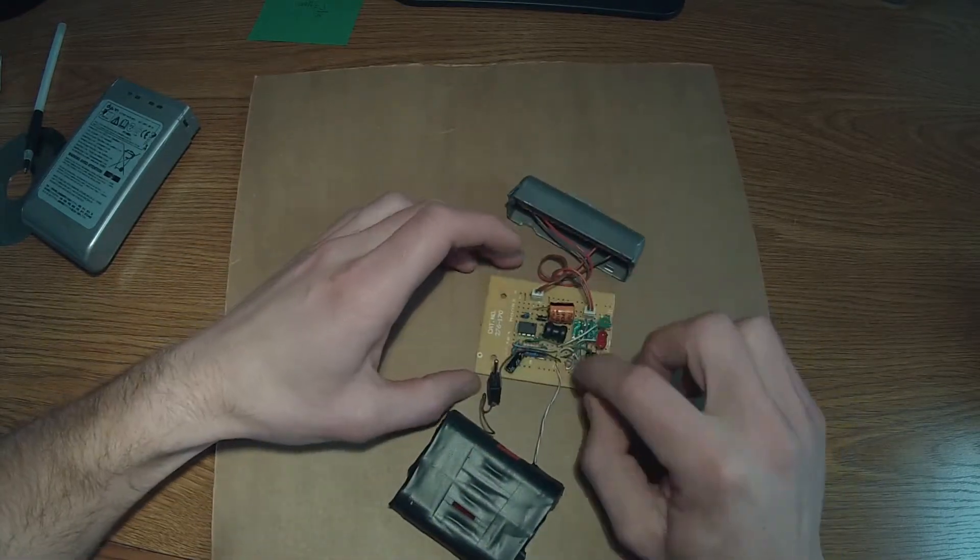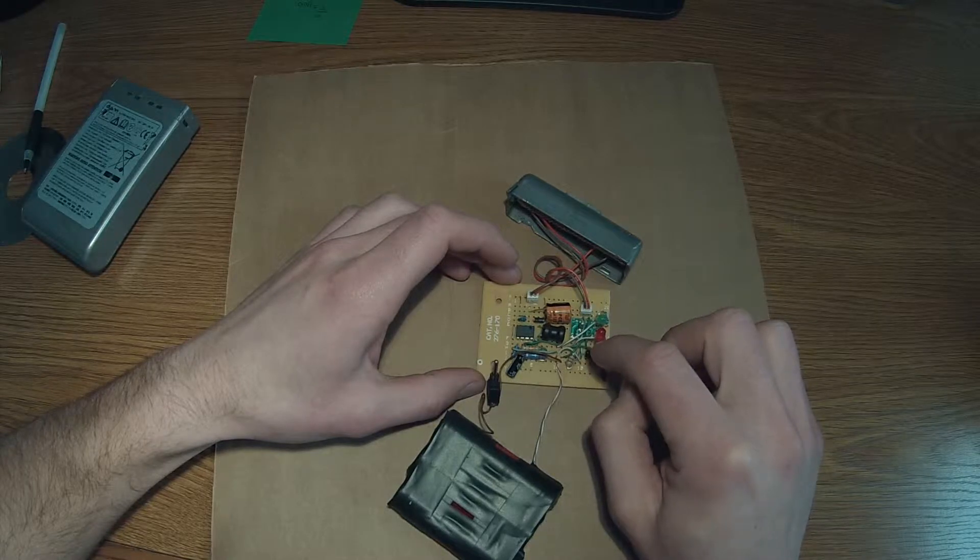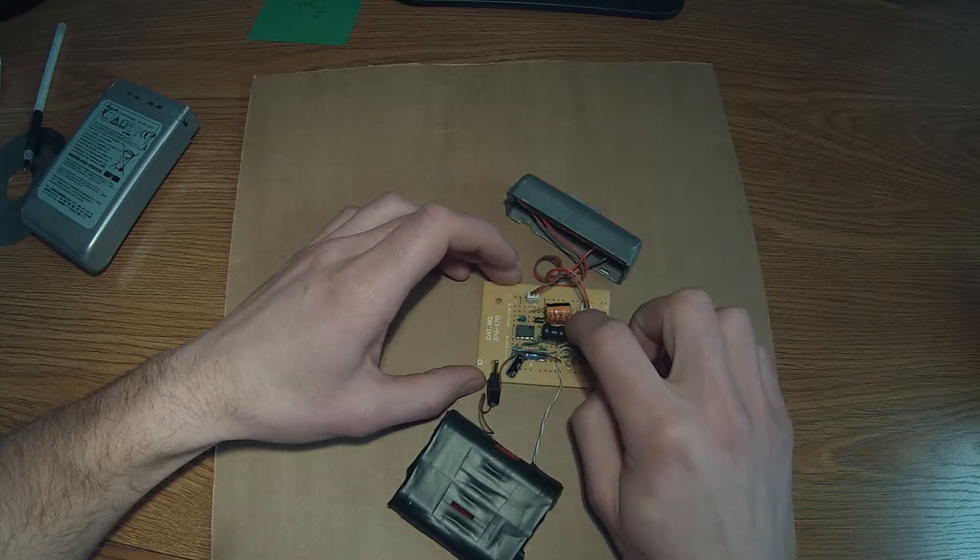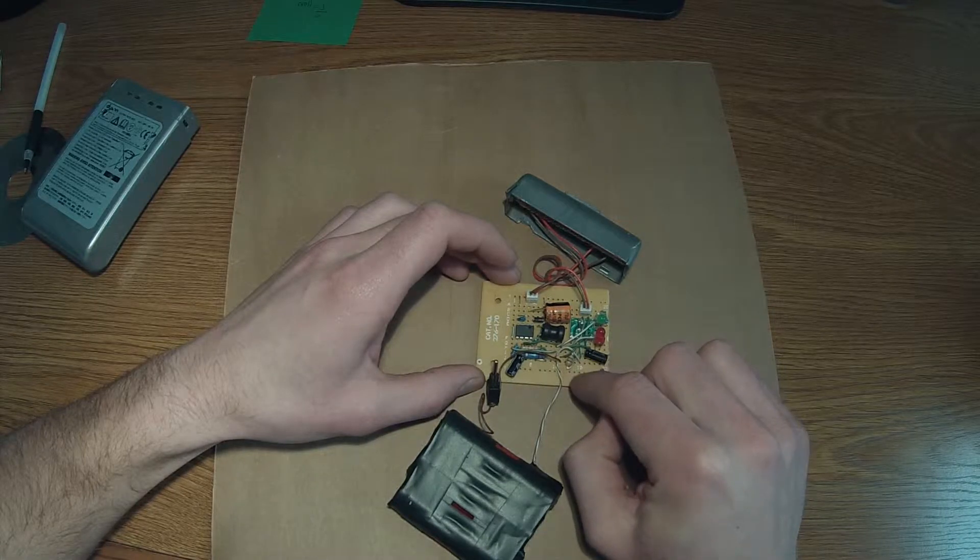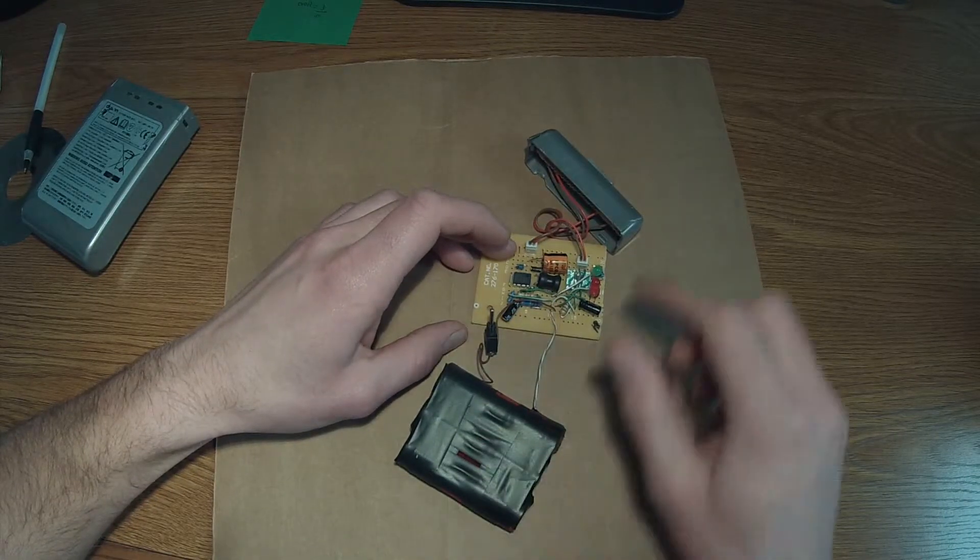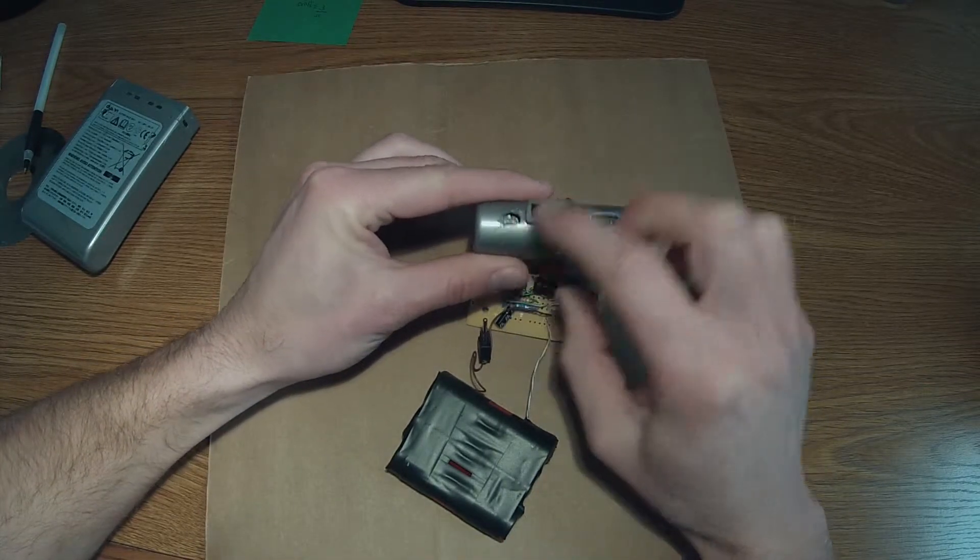And then on this other side right here, there's a Torx battery charging controller chip here under kind of this rat's nest. And we're charging the battery pack through this micro USB port here.